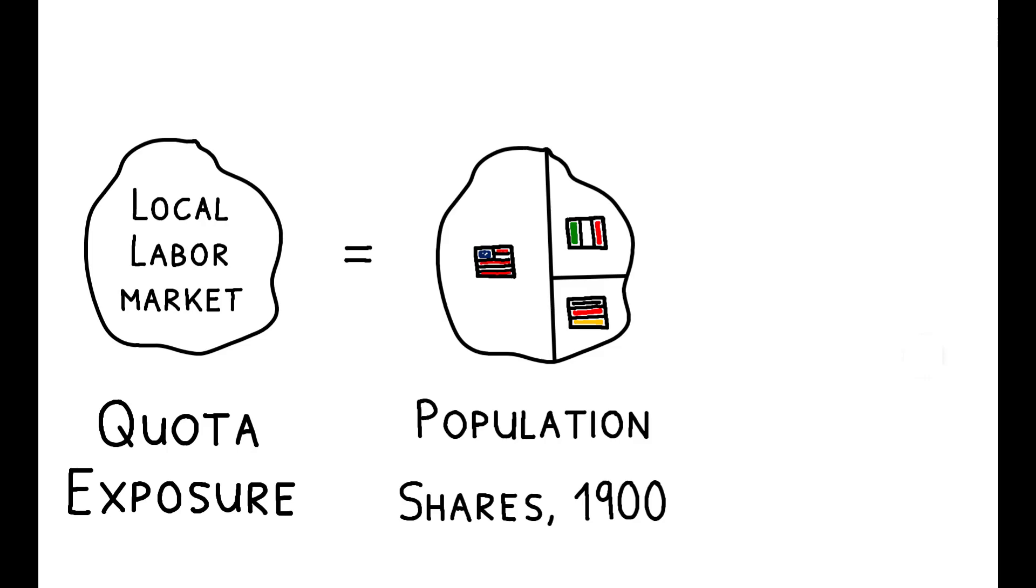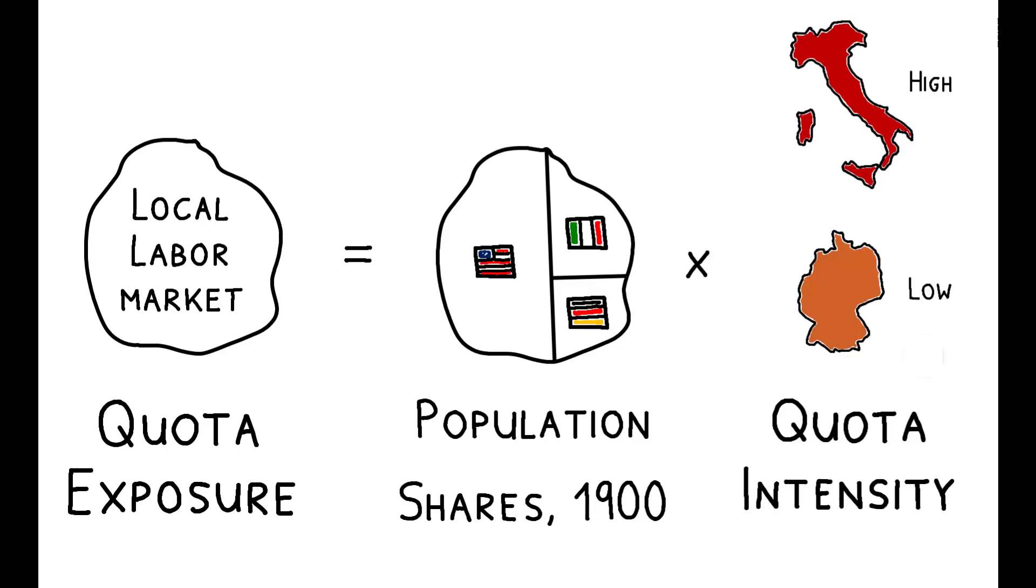Thus, the authors measure exposure within the U.S. by combining data on local population shares in 1900 with data on the intensity of the quota restriction for each country of origin.